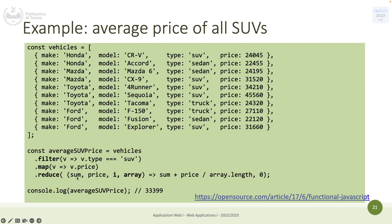filter iterates on all the answers array, and for each element (called 'answer', or 'element', or whatever) it checks if the answer's name matches the name passed as a parameter. If they match, it will return a new array containing only those matching values. This condenses a for-loop and an if-statement plus a temporary array into one line — one filter and a callback.